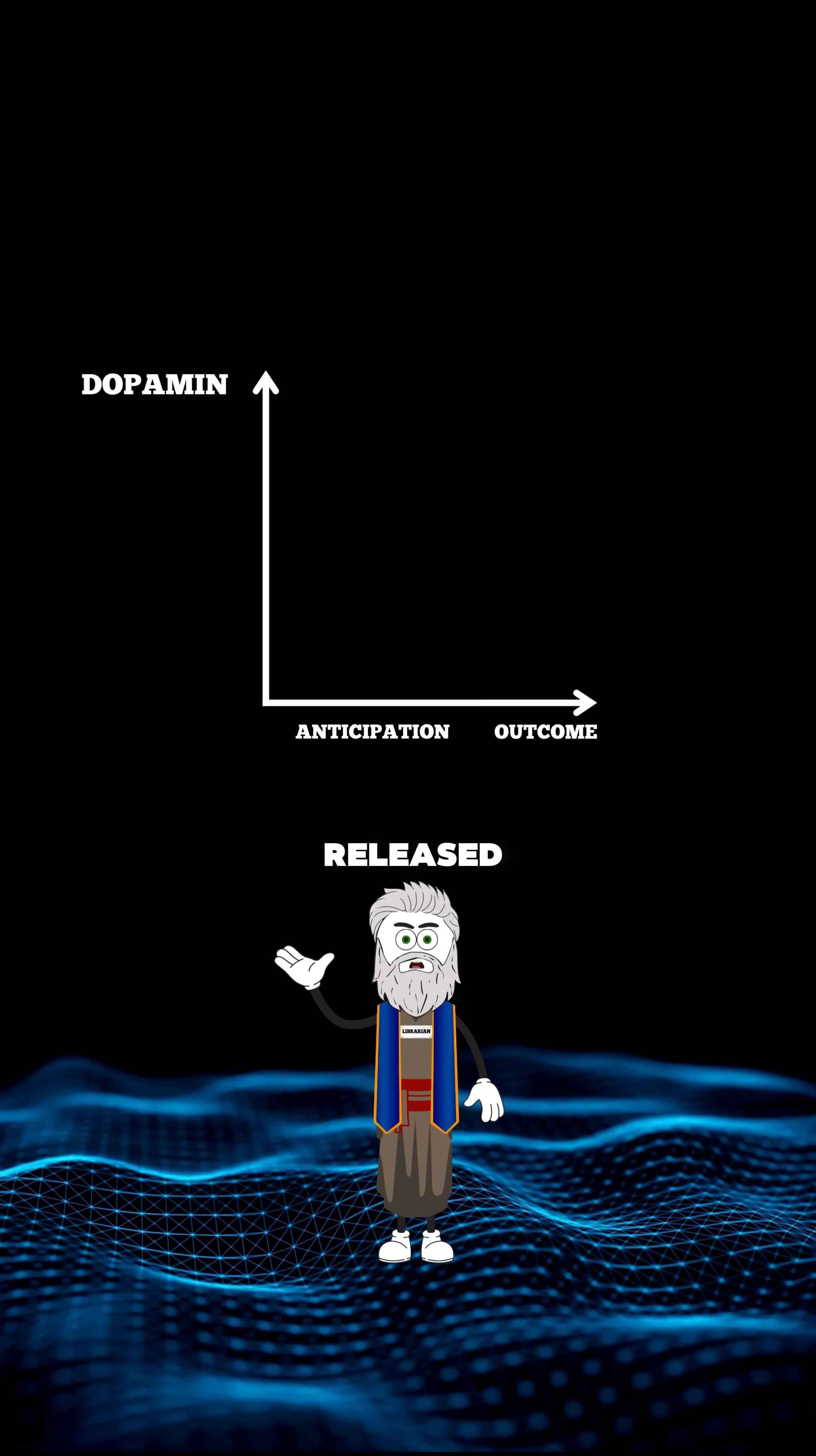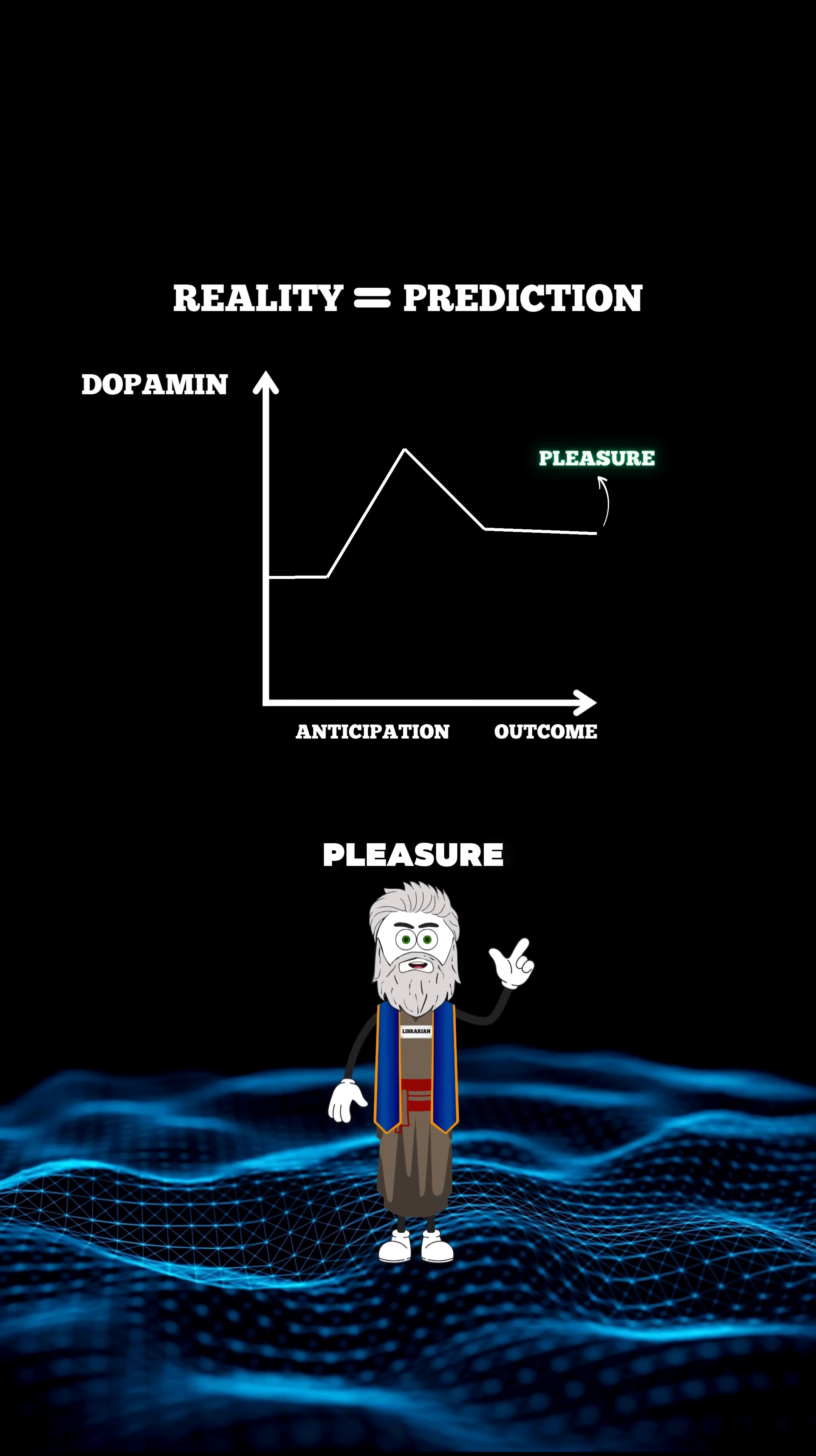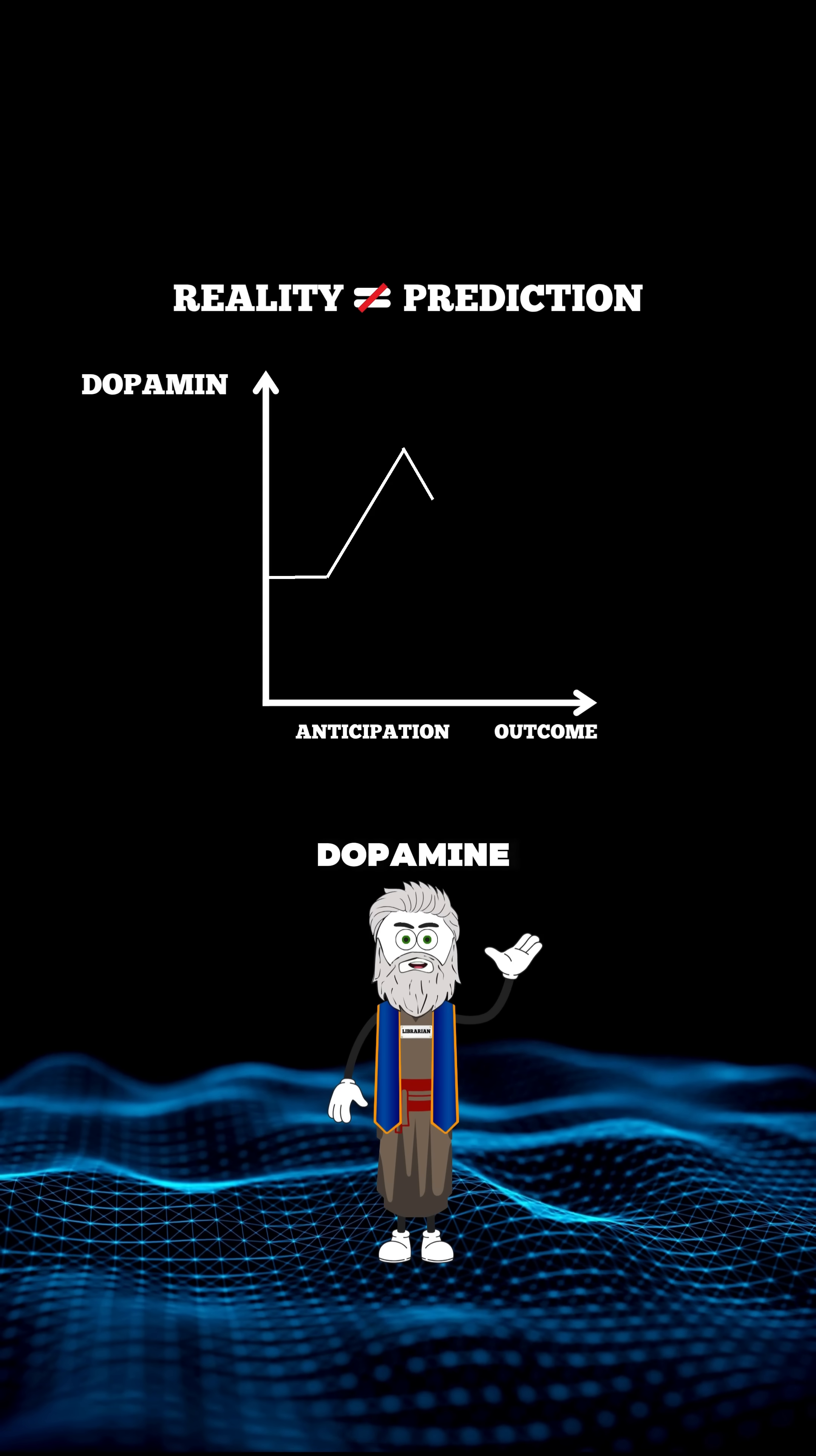That's because dopamine isn't released by the outcome, but during the anticipation. When reality aligns with prediction, you feel pleasure, but when it deviates, dopamine levels crash.